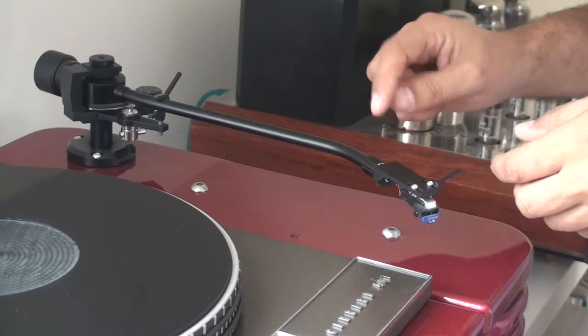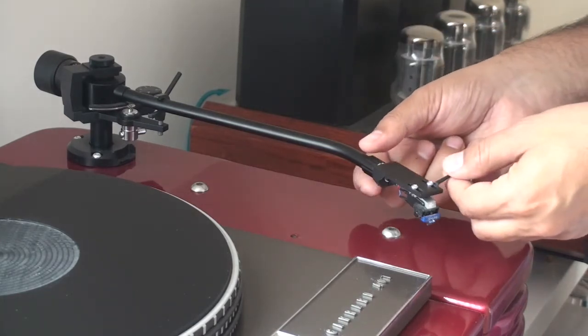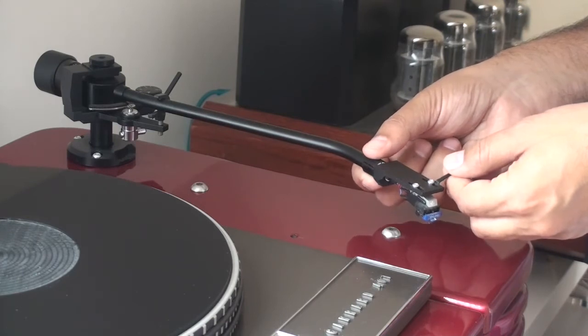And some have detachable headshells such as this Jelco. That makes it a little bit easier if you're inserting new cartridges.